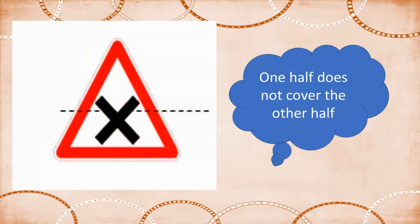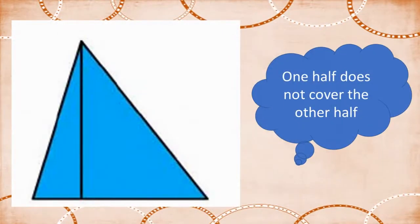Children, now look at this figure. Two parts of a figure made by a line do not fall exactly on one another, so the figure is asymmetrical about that line. Now look at this figure. The fold along the line in the triangle does not fall exactly on one another — one half does not cover the other half. So, the figure is asymmetrical about that line.